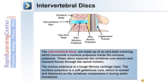The intervertebral discs are made up of an end plate covering which surrounds a nucleus pulposus inside the annulus pulposus. These discs separate the vertebrae and absorb and transmit forces through the spinal column.